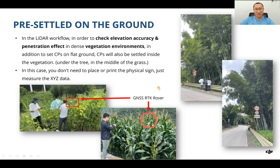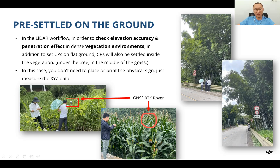In the LiDAR workflow, to check the elevation accuracy and penetration effect in dense vegetation environments, in addition to setting CPs on flat ground, CPs also need to be placed inside the vegetation — under trees or in the middle of grass. In this case, you don't need to place or paint a physical sign; just measure the XYZ data and do the comparison in the office, because it's very hard to place a sign or target inside grass.